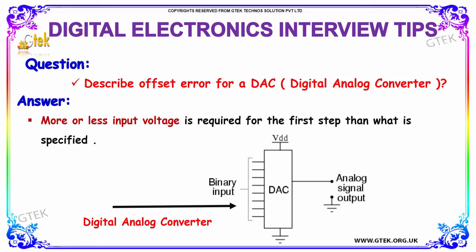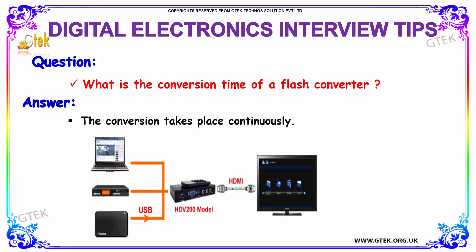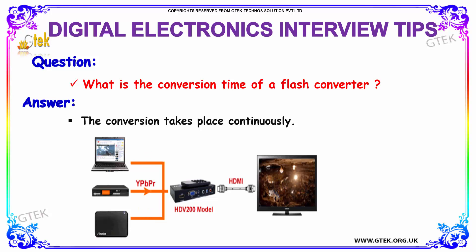The next question is: describe offset error for a DAC, that is a digital-to-analog converter. The answer is that more or less input voltage is required for the first step than what is specified. The next question is: what is the conversion time of a flash converter? The answer is that the conversion takes place continuously.